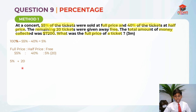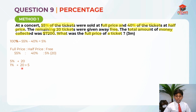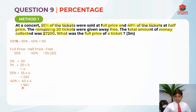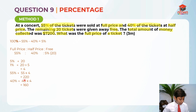So 5% represents 20. Always find 1% just like the units. 1% represents 20 divided by 5, which equals 4. So 1% represents 4. Now we can find 55% for full price: 55 times 4 equals 220. And we can find the half price 40%: 40 times 4 equals 160. So the full price tickets are 220, and the half price tickets are 160.